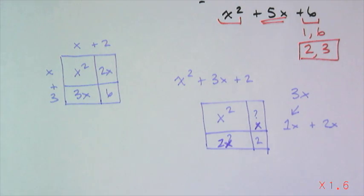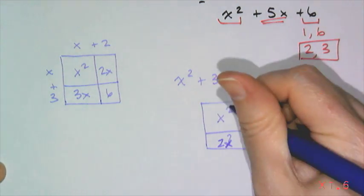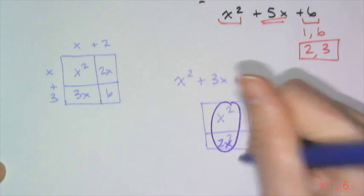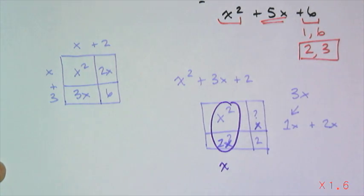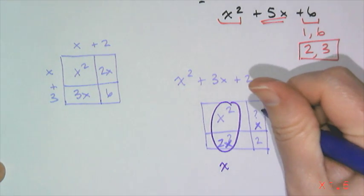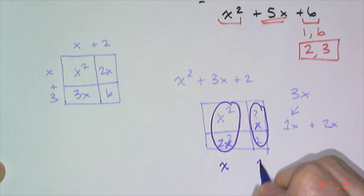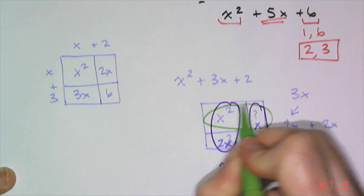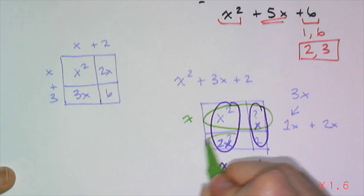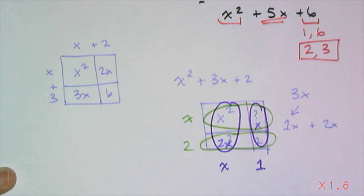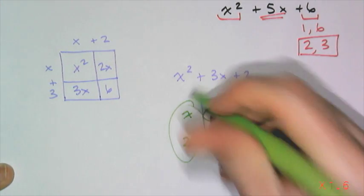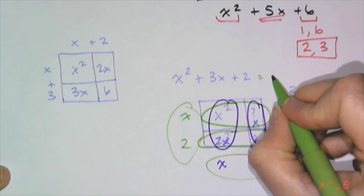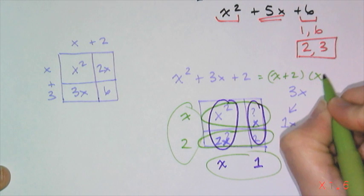You'll notice that the GCF of that column, x squared and 2x, is x. And the GCF of this column is 1. And then you'll notice the GCF of this row is x, and the GCF of this row is 2. And these numbers out here give you your factors because this is really x plus 2 times x plus 1.